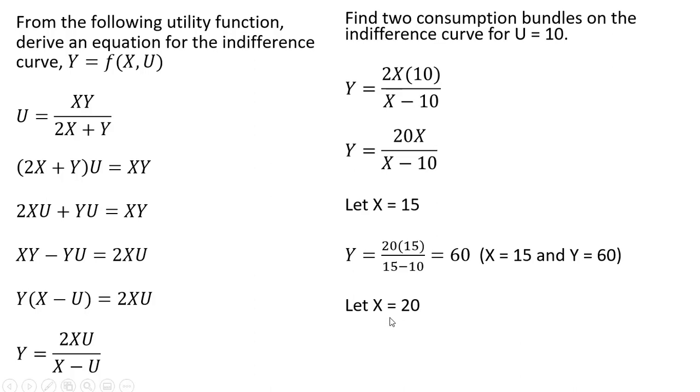And then let's pick another bundle, X equals 20. Plugging X equals 20 into our equation for the indifference curve where U equals 10. We see that Y equals 40. And so we get another consumption bundle that gives the consumer 10 units of utility.